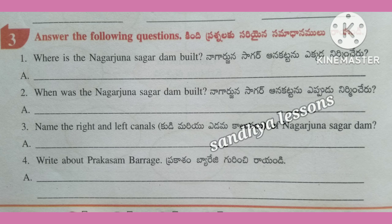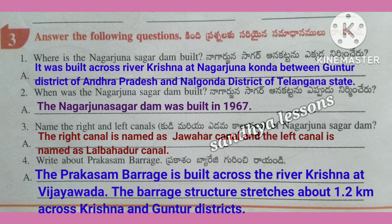Third, answer the following questions. First question: Where is the Nagarjuna Sagar Dam built? It was built across river Krishna at Nagarjuna Konda, between Guntur district of Andhra Pradesh and Nalagonda district of Telangana state. Second question: When was the Nagarjuna Sagar Dam built? The Nagarjuna Sagar Dam was built in 1967. Third question: Name the right and left canals of Nagarjuna Sagar Dam. The right canal is named Jawahar Canal and the left canal is named Lal Bahadur Canal. Fourth question: Write about Prakasambaraj. The Prakasambaraj is built across the river Krishna at Vijayawada. The barrage structure stretches about 1.2 km across Krishna and Guntur districts.